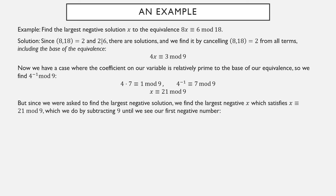We were asked to find the largest negative solution, so we need the largest negative integer satisfying x ≡ 21 modulo 9. Since we're working mod 9, I can subtract 9 repeatedly without changing the equivalence class. Subtracting 9 three times from 21 gives negative 6. So negative 6 is the largest negative number that solves 8x ≡ 6 mod 18.